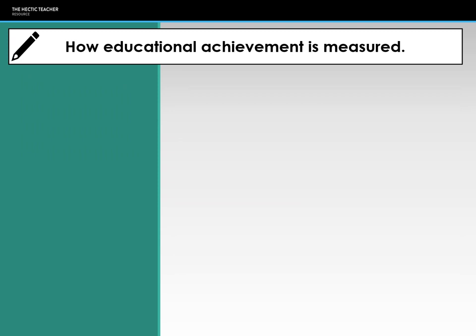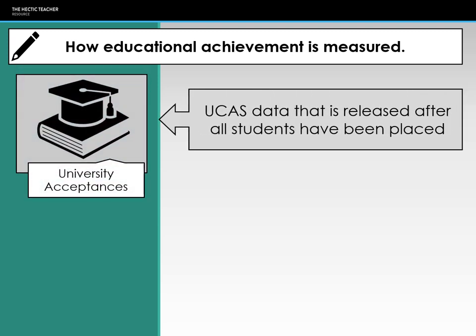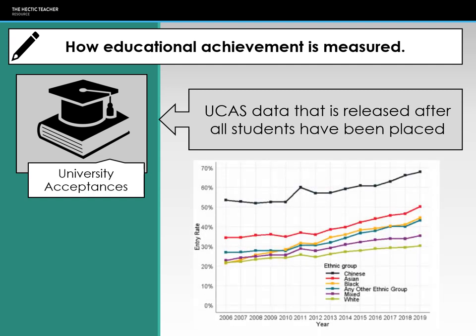The final measure of educational achievement is university placement — specifically who actually turns up and enrolls, not just who is offered a place or accepted on a course. This data doesn't come out until around December or January after enrollment is complete. Chinese and Asian students tend to have higher levels of university acceptance, with white ethnicity being the lowest group. Data on gender and social class isn't currently available; the focus is on ethnicity.